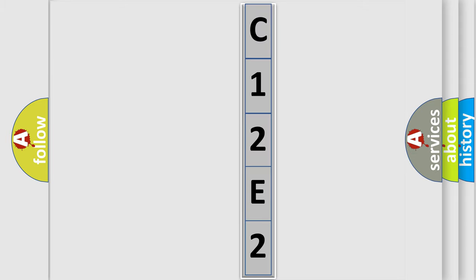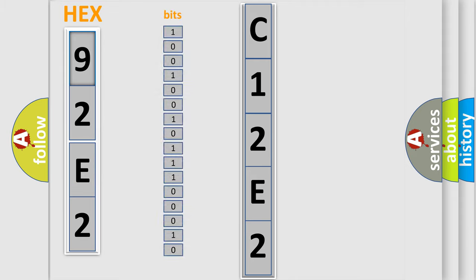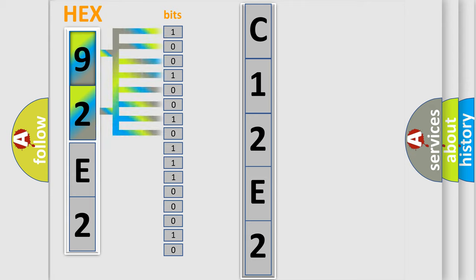The error code is split into two bytes consisting of 16 bits. One bit is the basic unit that each computer works with. The bit has two logical states: zero, low level, and one, high level. By combining the first two bits, the basic character of the error code is expressed.